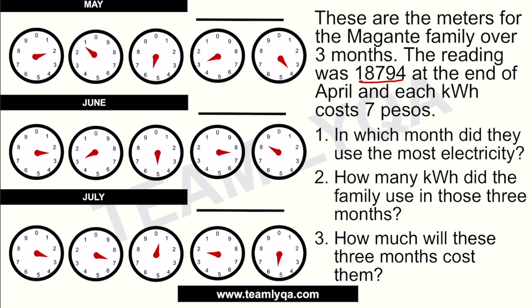As discussed in the first video, when reading a meter, we look at where the arrow is pointing, and if it's between two numbers, we take the lower one. For May's first panel: 2. Between 1 and 2: 1. Between 5 and 6: 5. Then 3, and 4. So the May reading is 21,534. Subtracting the April reading of 18,794, their consumption in May was 2,740 kilowatt hours.